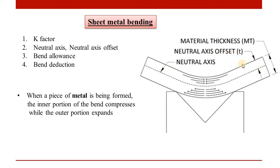When we apply bending, a k-factor is applied. Based on the k-factor value, the neutral axis is offset into the material — so it is not at the exact center. The k-factor determines the position of the neutral axis within the material thickness.